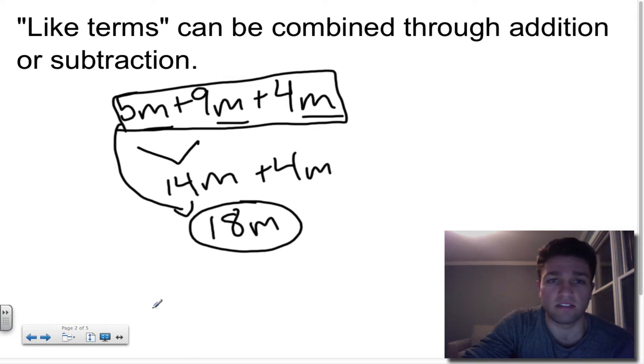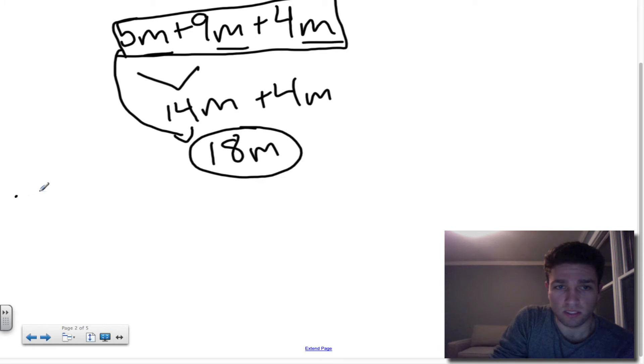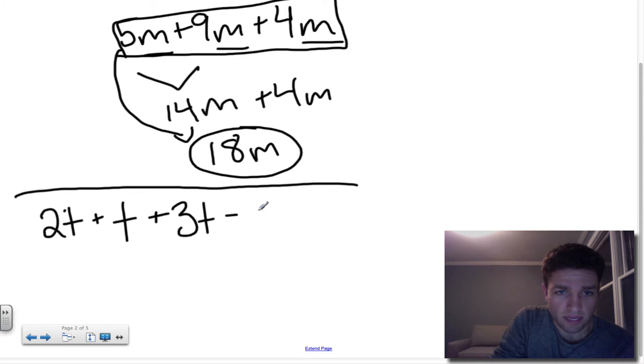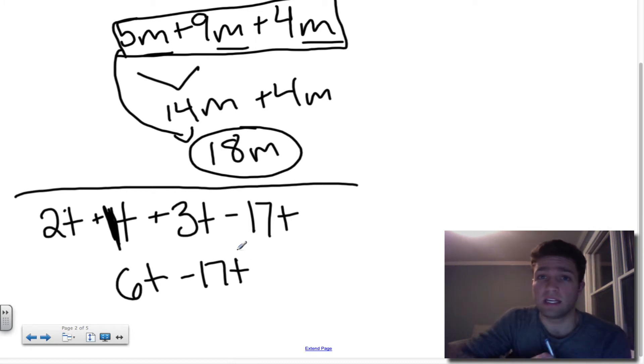Let's look at just one example of subtracting with like terms. So let's look at 2t plus t plus 3t minus 17t. Now, remember this t really has a 1 in front of it, so you can write it in there if it helps you. So I really have 2 plus 1 plus 3, which would be 6t. And I still have my subtraction to deal with. And all this is now is a little bit of integer work. 6 minus 17 should leave you with negative 11t. And that's all there is to combining like terms.